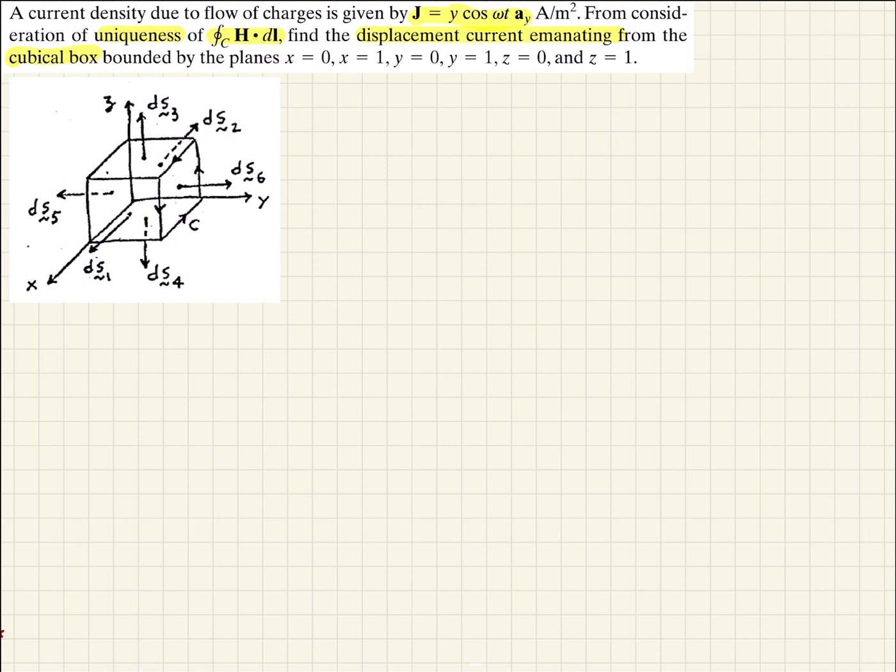is since we're only defined in the unit vector y direction, that limits the directions of current flow. So what that means for us then, is as we look at this diagram, if we start with the surface vector direction defined in DS1, you can see that it is perpendicular to y. So therefore, that dot product will be 0.